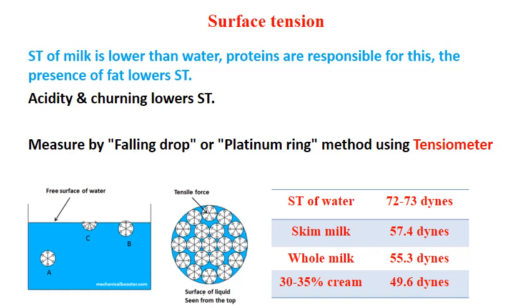Standard values for surface tension: water is 72 to 73 dynes per centimeter, skim milk is 57.4, whole milk is 55.3, and cream with 30 to 35 percent fat is 49.6 dynes per centimeter.